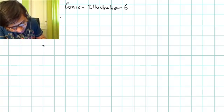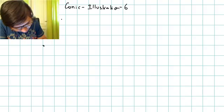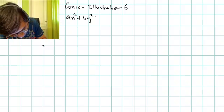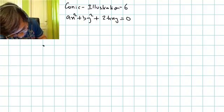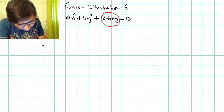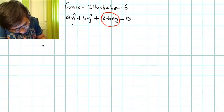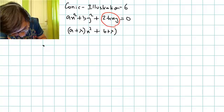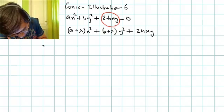The equations of two pairs of lines are given. The first pair of lines is ax² + by² + 2hxy = 0 — this term is missing in the text of the question. The other pair of lines is (a + λ)x² + (b + λ)y² + 2hxy = 0.